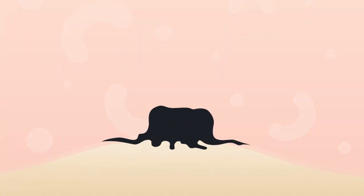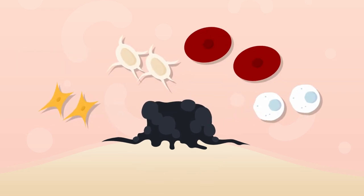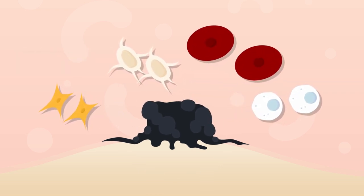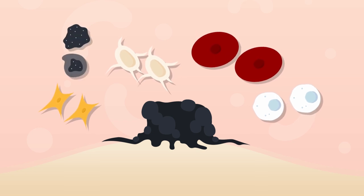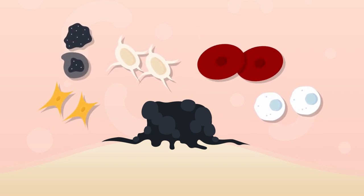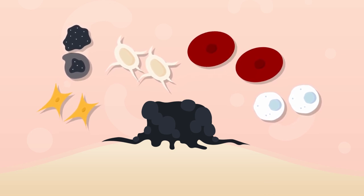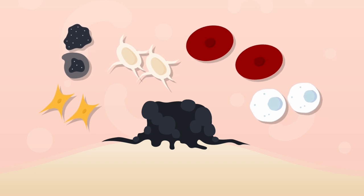The primary tumor is the first area where cancer cells proliferate in tissues. Tumor growth is sustained by a heterogeneous population of cells called the tumor microenvironment, or TME. The development of this microenvironment and the proliferation of cancer cells are reliant on many other cell types, such as mesenchymal stem cells, fibroblasts, pericytes, and immune cells.